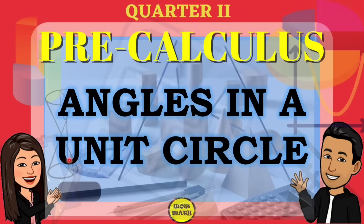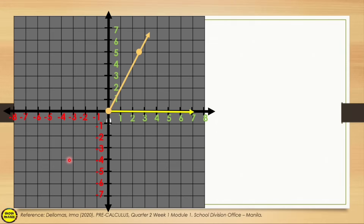Hello mga kaawat! In this video lesson we will discuss angles in a unit circle. In geometry, an angle is defined as the union of two non-collinear rays which have the same endpoint. This definition restricts angle measures between zero degrees and 180 degrees inclusive, but in trigonometry we will discuss angles from a different perspective.